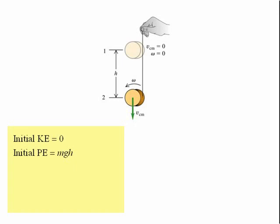The final potential energy is zero and the final kinetic energy is the yoyo's translational energy plus its rotational energy. That's ½ times its mass times the velocity of its center of mass squared plus ½ times the moment of inertia times omega squared.